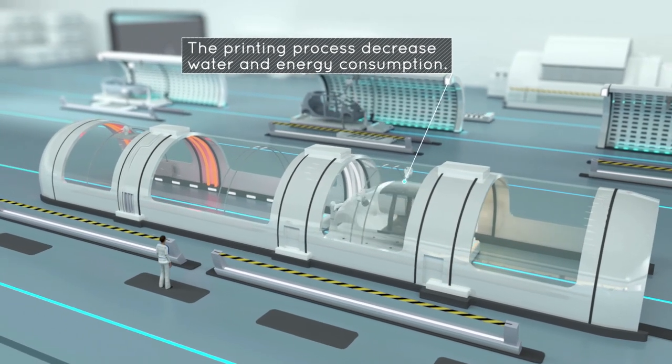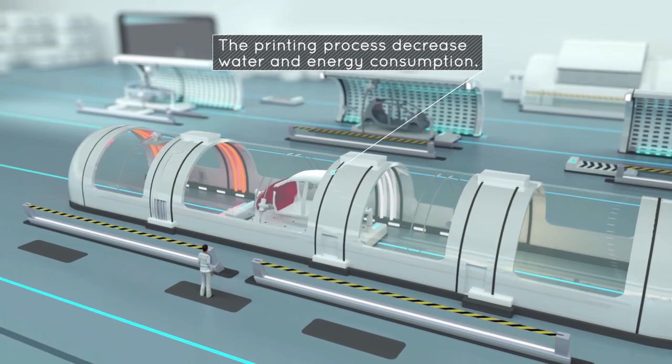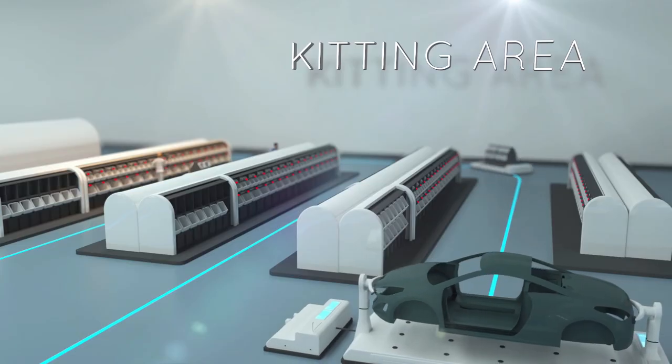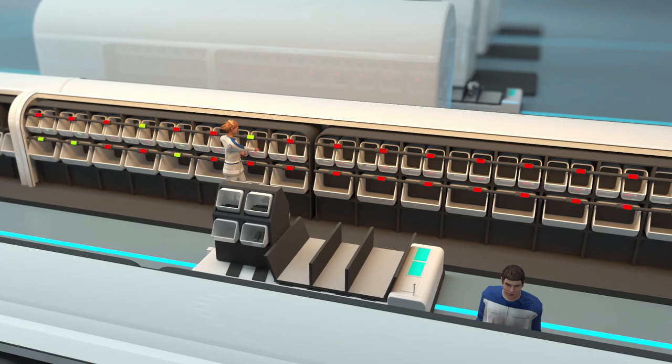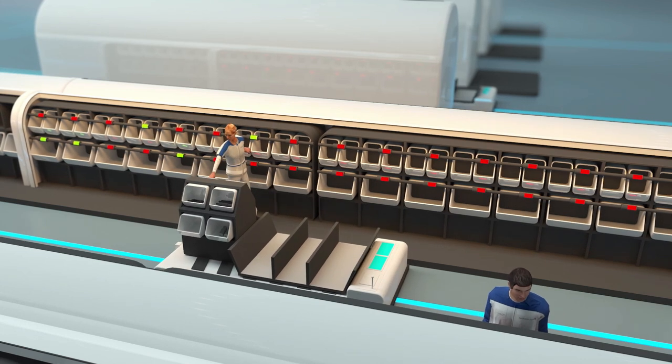In the paint shop, the printing system integrates customized solutions into the production process. In kitting areas, operators and robots make up the assembly kit based on the customer's order.